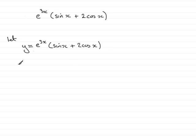So in order to find dy by dx, what I'm going to need to do in this example is, because I've got two functions of x being multiplied together, that's e to the 3x times this bracket, I need to use the product rule for differentiation.